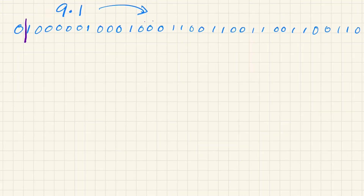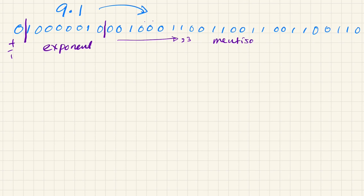Let's split this out. This one bit is used for the sign — plus or minus. From here up to here, these 8 bits are the exponent. And this part here — 23 places — we get as the Mantissa, so 23 bits as the Mantissa.